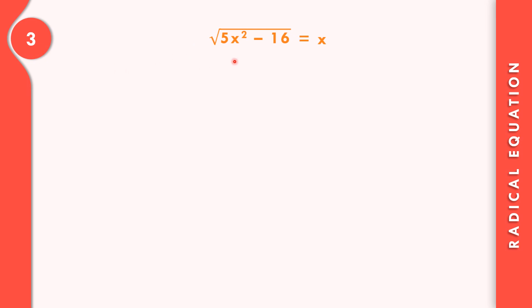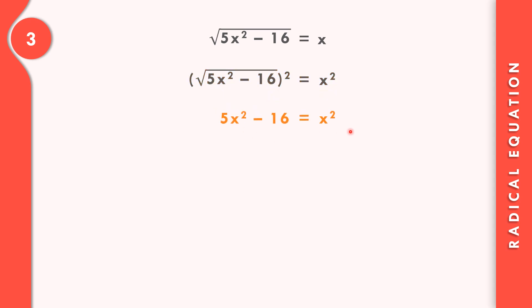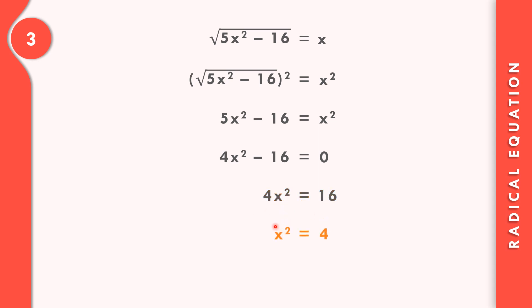In example number 3, the square root of 5x squared minus 16 equals x. Squaring both sides gives 5x squared minus 16 equals x squared. Combining: 5x squared minus x squared gives 4x squared, so 4x squared minus 16 equals 0, then 4x squared equals 16. Dividing both sides by 4 gives x squared equals 4. Using the square root property, x equals positive or negative 2.